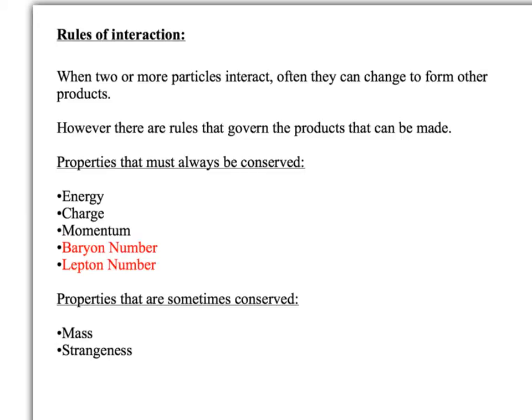But particularly with particle physics there's two other key things that you need to know are conserved, and there's baryon number and there's the lepton number. Those also must be conserved in all interactions. Now properties that are sometimes conserved: probably in the past you've actually always said that mass is conserved, but when we look at Einstein's famous equation E equals mc squared, that actually tells us that mass can be interchangeable with energy. So that's not always the case though it is quite often. And also strangeness is not necessarily always conserved, but it is conserved if the interaction is through the strong nuclear force.